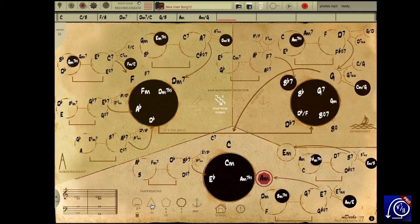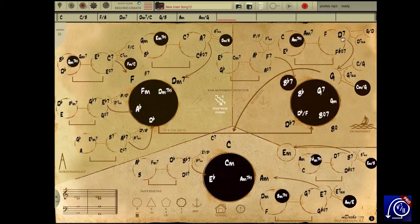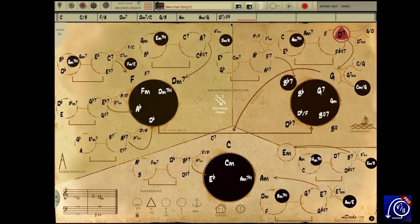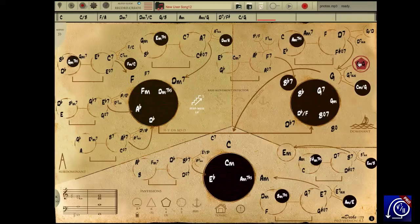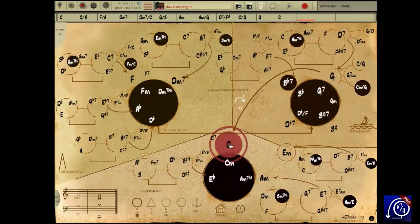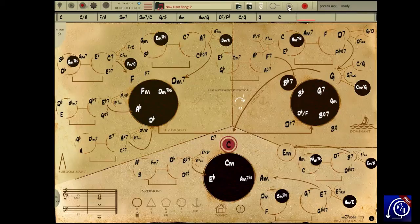The 5 of the 5 in first inversion, which gives us an F sharp on the bass. And finally, a 1-6-4. To a 5. To the 1. Also pay attention to the bass lines we've created, which will be shown by the bass movement detector.